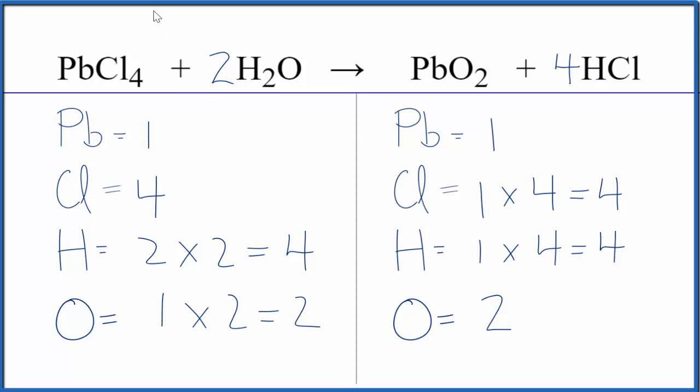If you were to write the states, I would expect that we'd have this PbCl4. It could be a solid. We'd put it in liquid water here, and we'd end up with some PbO2. And then for the HCl, if we had an exact ratio here, that would be a gas.